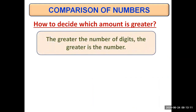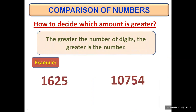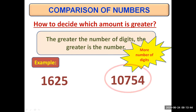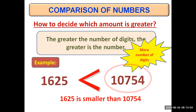First thing is: if you are given two different amounts with different number of digits, the greater the number of digits, the greater is the number. For example, 1625 has four digits whereas 10754 has five digits. So the second one has greater number of digits and will be greater. The symbol opens its mouth towards the greater number, and we say that 1625 is smaller than 10754.